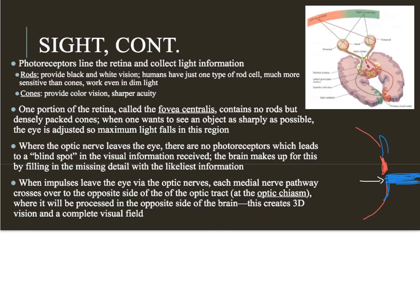Any light rays that hit that particular part of your retina are not received or processed by the brain. Every view we have of the world has little parts that are missing because those light rays weren't absorbed and can't be processed. But our brains are good at filling in the details — if the rest of the picture is obvious, the brain fills in what's likely to be there, though we can't always be certain.